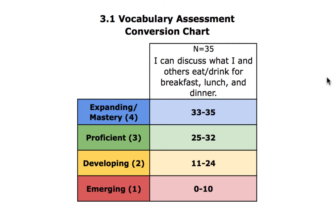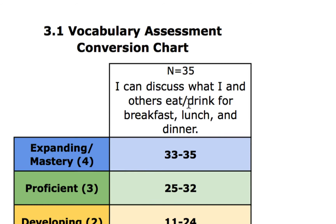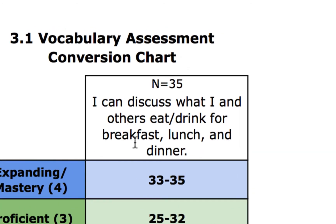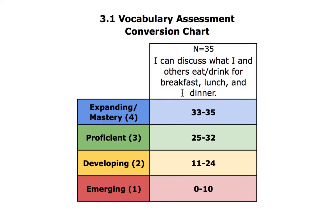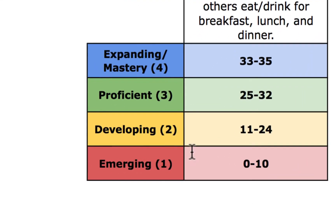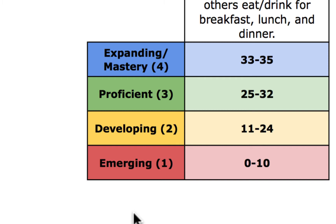Up at the top, I have included the student learning target: I can discuss what I and others eat and drink for breakfast, lunch, and dinner. Above the target, I included the indicator N equals 35, which reminds us of the number of questions on the assessment. Then, on the left column, you can see my four grading categories. I use these on all assessments, rubrics, and for standards-based reporting.